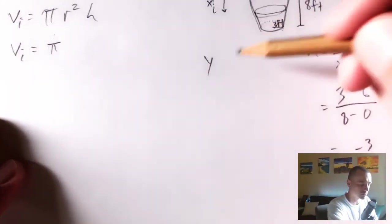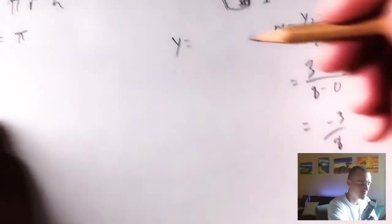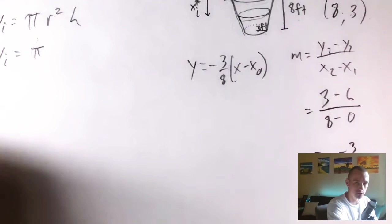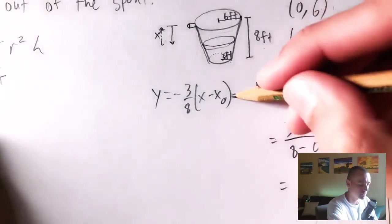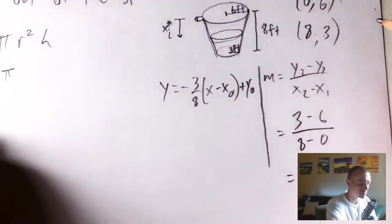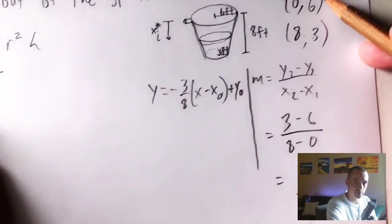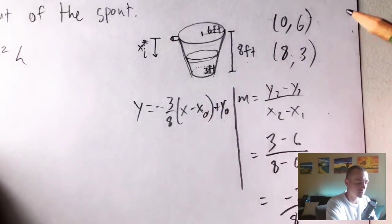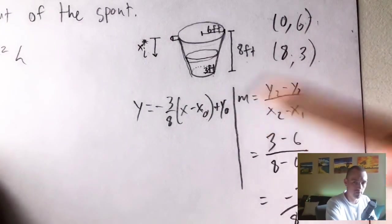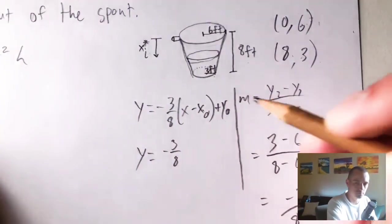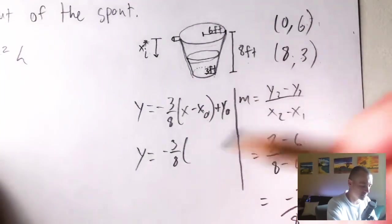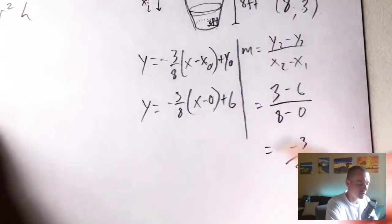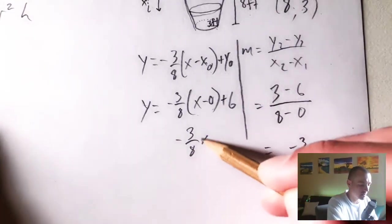Then we're going to create our linear function, which is going to be y equals our slope, which is negative three eighths times x minus x zero, where that x zero is just some x of a point that lies on this function, plus y zero. We can just take any point that we know lies on this function. Let's just pick this one, zero six, since x is zero that should make things pretty simple for us. We'll plug in x equals zero for x zero and y equals six for y zero. So plugging those in gives us y equals negative three eighths times x minus zero plus six. Now we can just simplify this. x minus zero is just x, so we're just going to get negative three eighths x plus six.